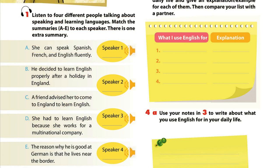Unit 9, Page 39 — Skills 2: Listening, Activity 1. Listen to four different people talking about speaking and learning languages. Match the summaries to each speaker. There is one extra summary. Speaker 1: My first language is French, but I live near the border, so I'm reasonably good at German. I can also get by in Italian — we went to Rome last summer and I picked up the basics. Speaker 2: My mother is Spanish and my father is French, so I'm bilingual. I'm also fluent in English, which I need for my job. I can have a conversation in Italian, but it's a bit rusty.